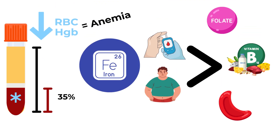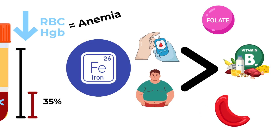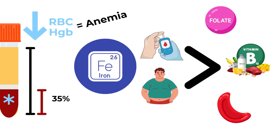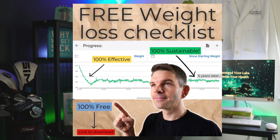Low hematocrit is another way of saying anemia. The most common causes of anemia are iron deficiency 50% of the time, followed by anemia of chronic disease, and then all the other types — like B12 and folate deficiencies, sickle cell disease, thalassemias, bone marrow problems, etc. Hone in on iron deficiency and anemia of chronic disease, because those are by far the most common. I've linked my iron deficiency guide and the free weight loss checklist in the description to help you address those causes.